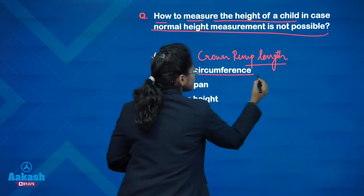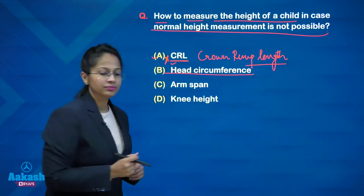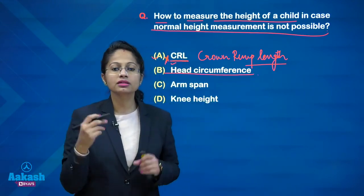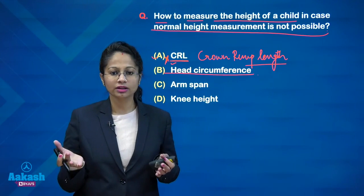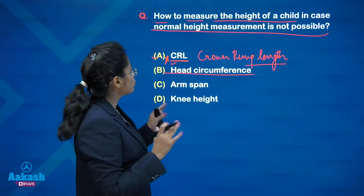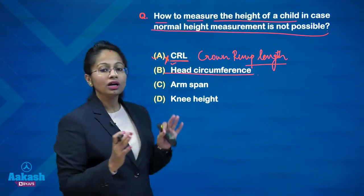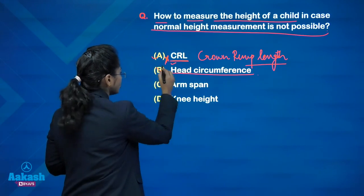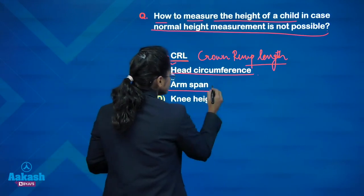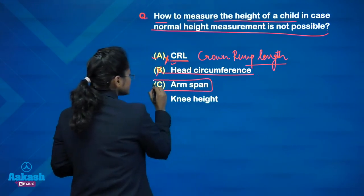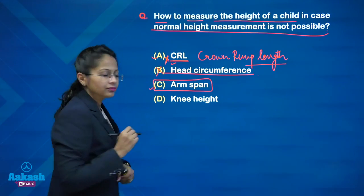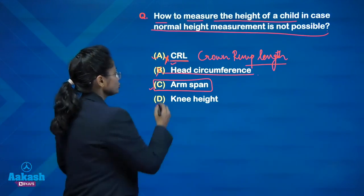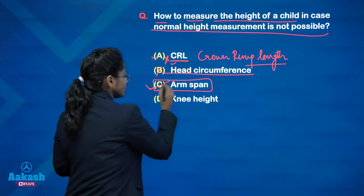The second option is head circumference. The head circumference of a child has no correlation with the height of the child, so this option is also wrong. The next option is arm span, and arm span is the right answer.